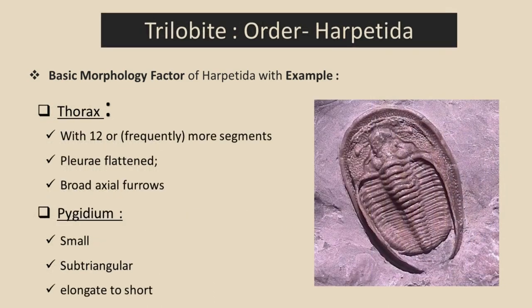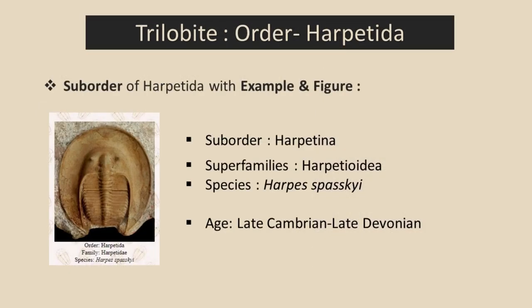The segmented part of the trilobite is called the thorax, which is normally divided into 12 or more segments in Order Harpetida. The pleural part is flattened, and the medial part — called the axial region — is broad. Looking at the posterior part, we find the pygidium, which is small and sub-triangular in shape, appearing elongated to short.